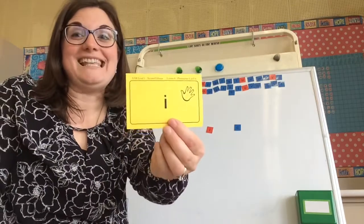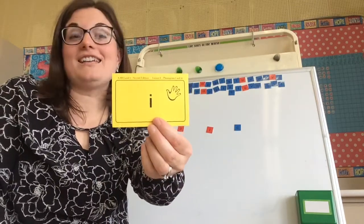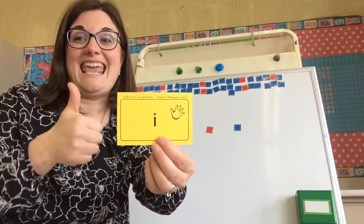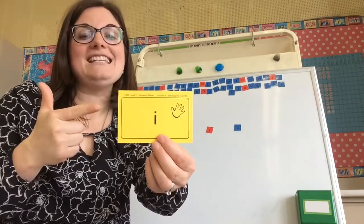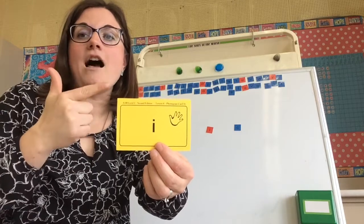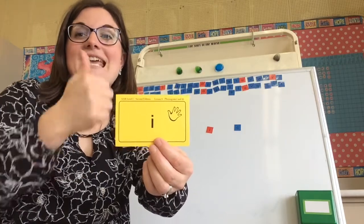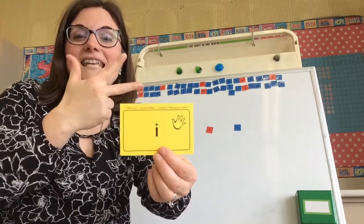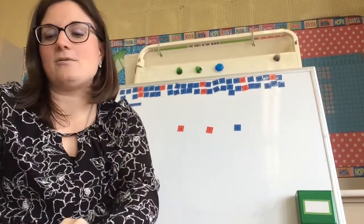I, we know this is itchy. I can also say its name, i. So it can say ih, i, and it can say ee. Ih, i, ee. Say that with me. Ih, i, ee. So it also has three sounds.